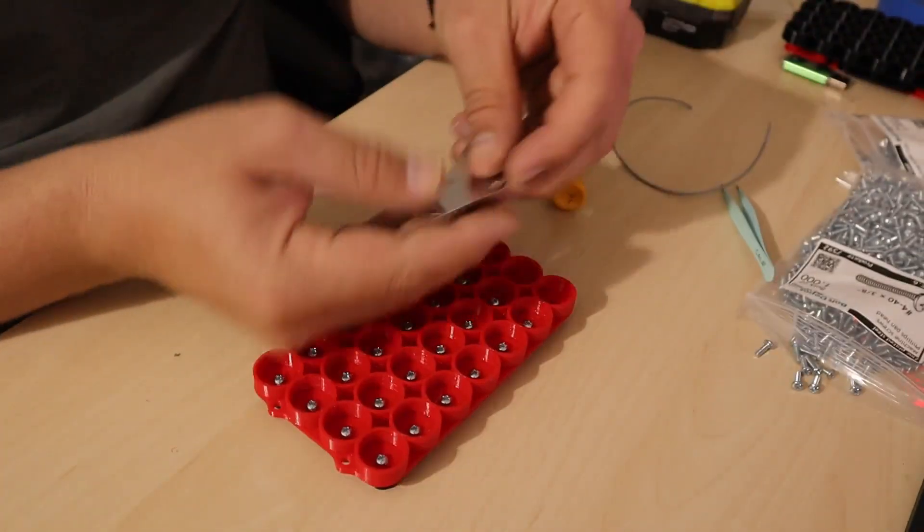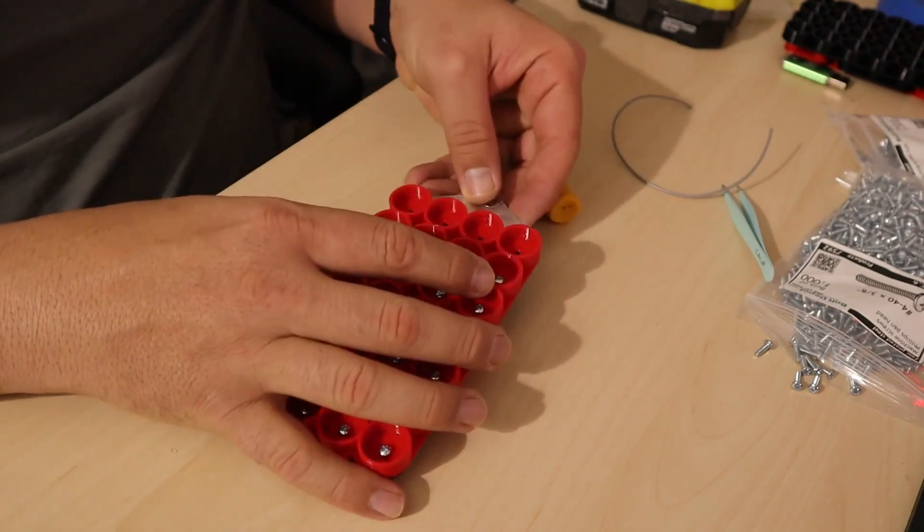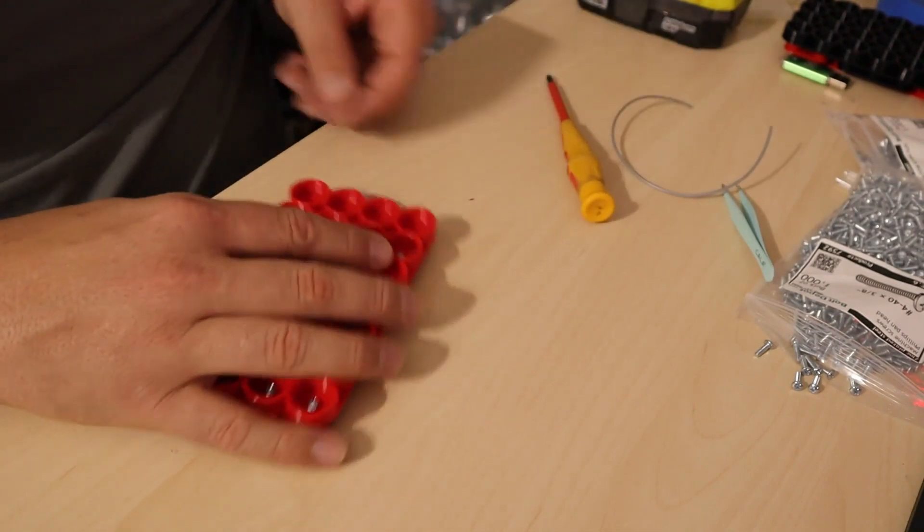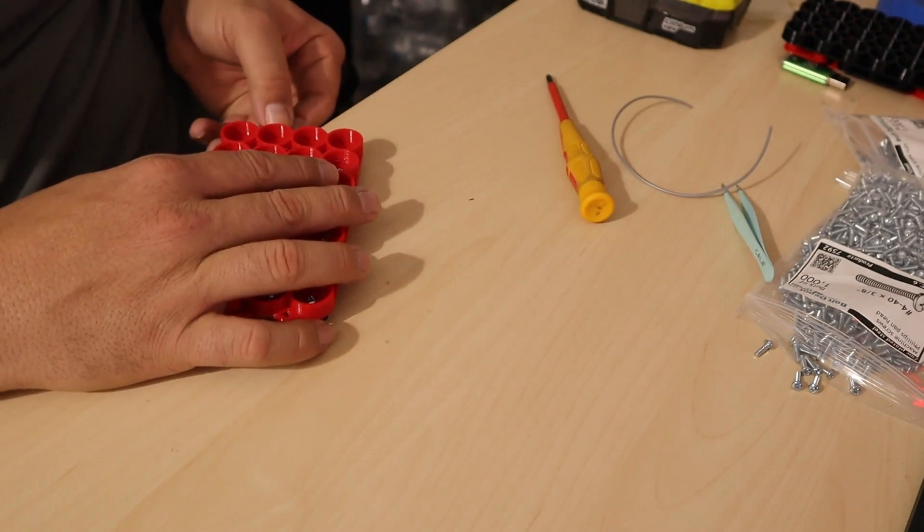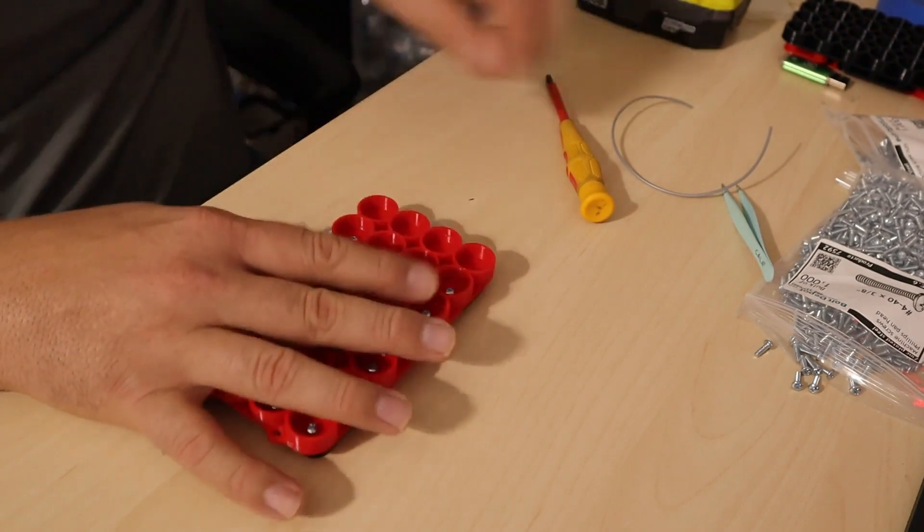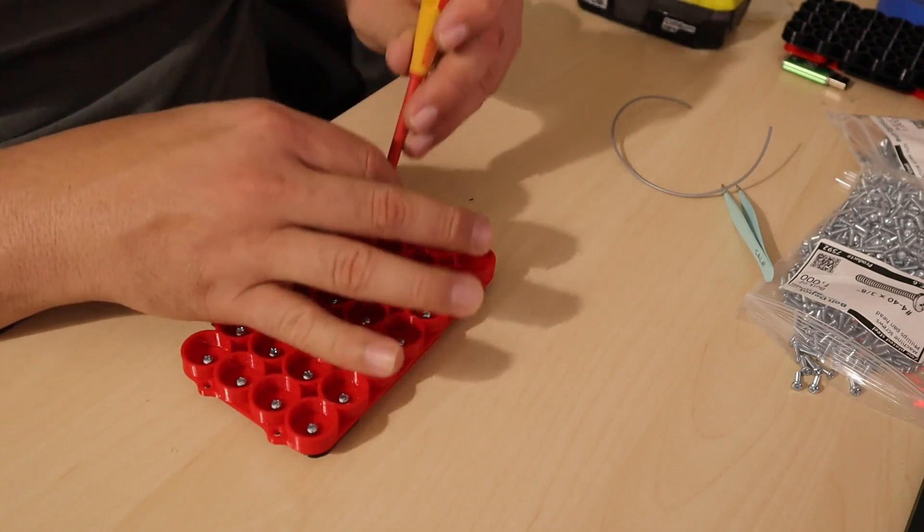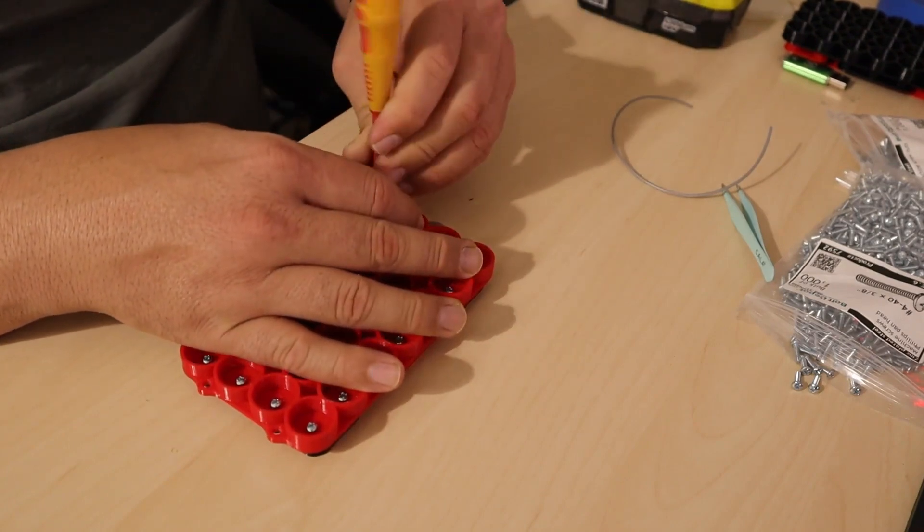Once you're done with the boss bar, take the terminal and place it on the far left of the spacer. This is going to be used for the positive side of the battery kit. And just as you did before, just give it a light turn.